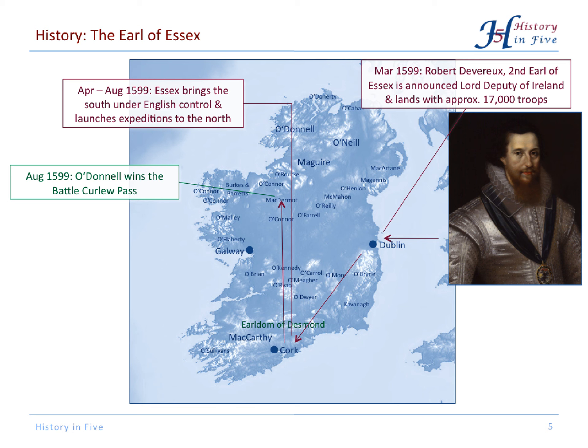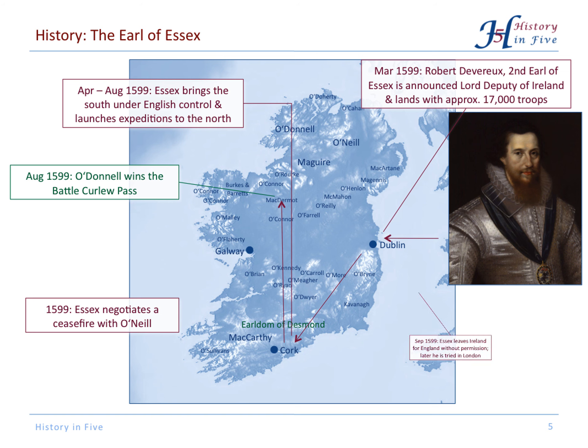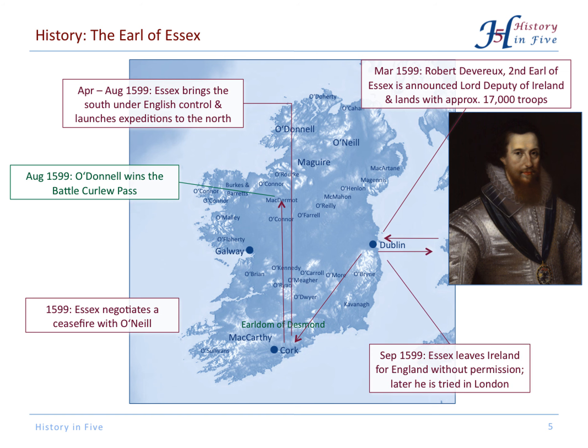Essex lost a decisive battle on the Curlew Pass. Then he entered negotiations with O'Neill, managing a ceasefire, but he was not authorized to do so. Half a year after he landed, he returned to England, also because he had no authority to do some of the things he did. He was later put on trial in London.